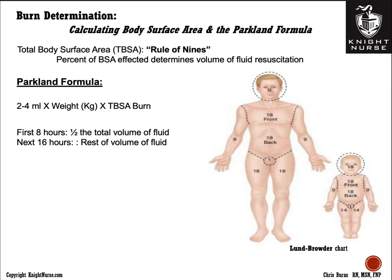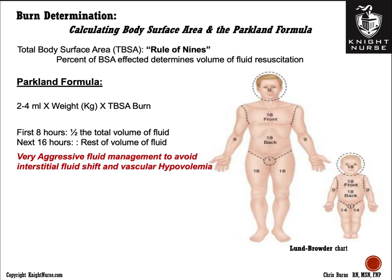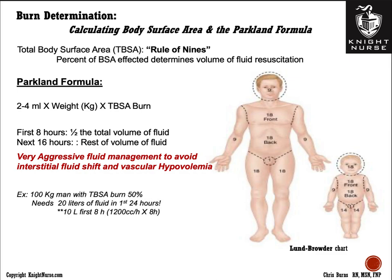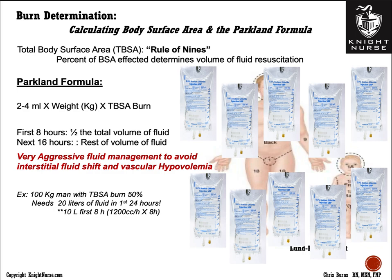You are really front-loading the first eight hours. This is very aggressive fluid management to avoid interstitial fluid shift away from the vascular compartment causing hypovolemia. For example, a 100-kilogram man with a 50% total body surface area burn needs 20 liters of fluid in the first 24 hours — 10 liters in the first eight hours. That means running fluid at 1,200 cc's per hour for the first eight hours, which is practically bolusing as fast as you can.